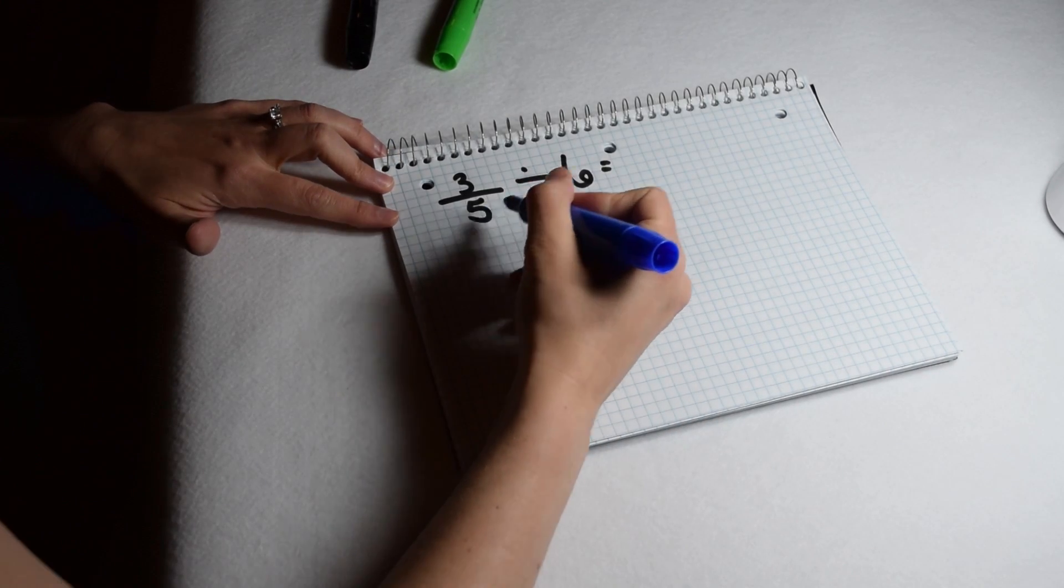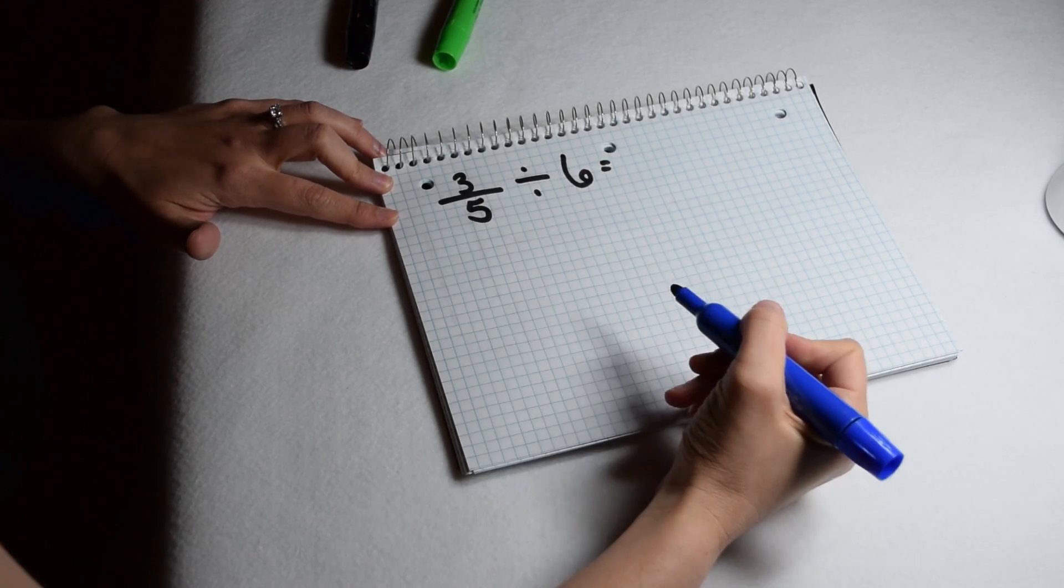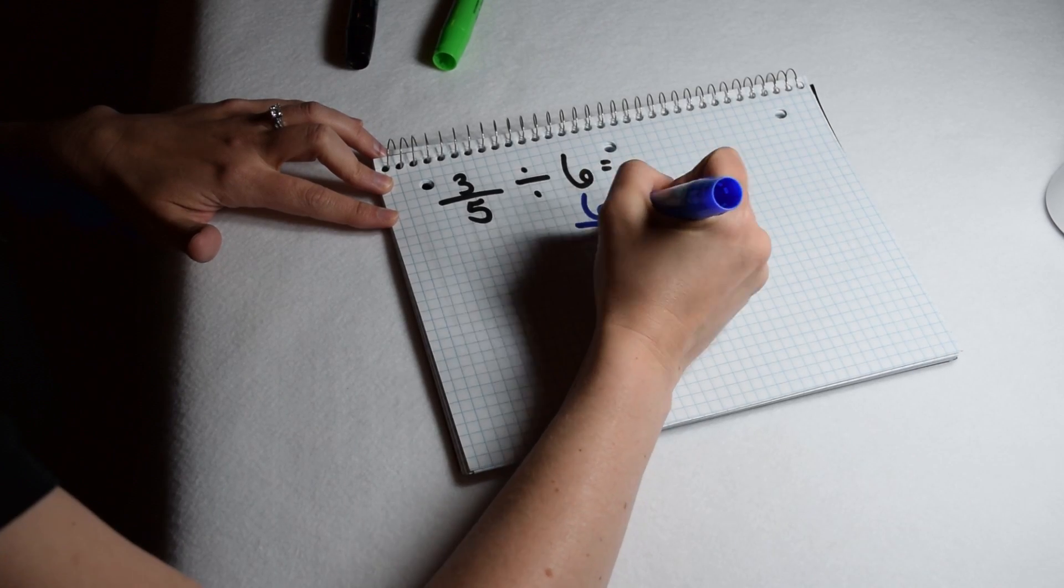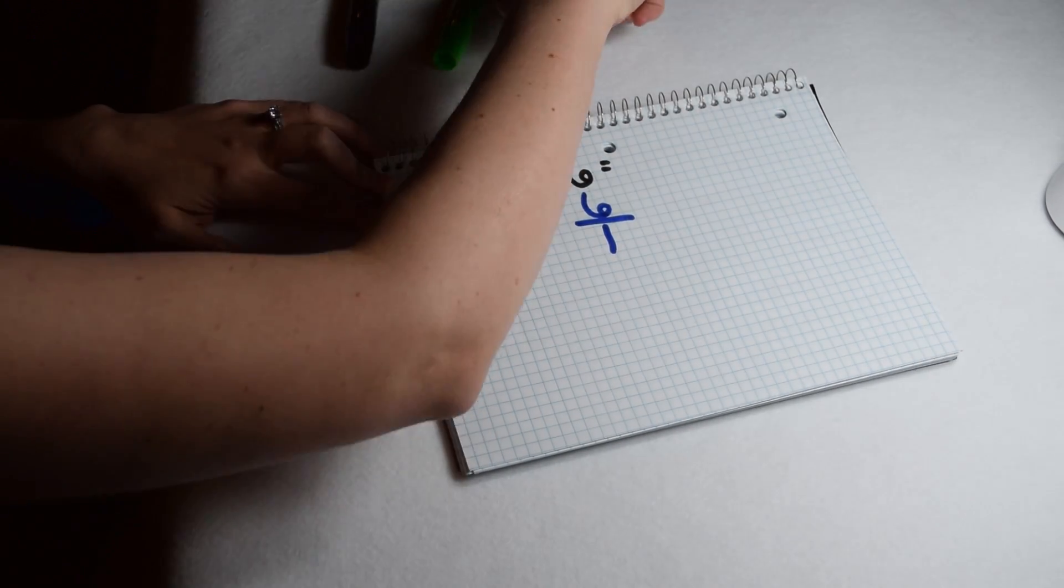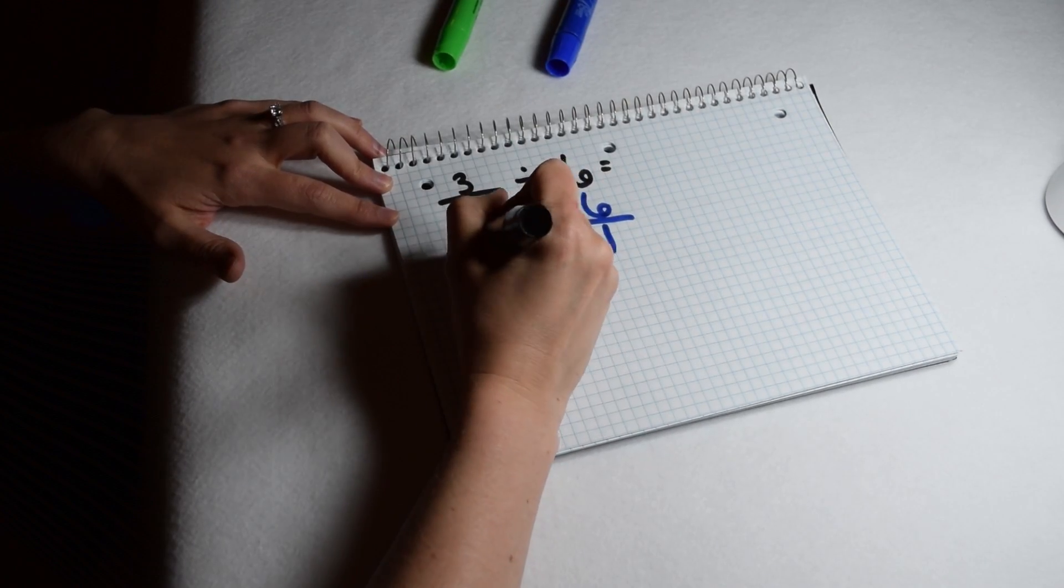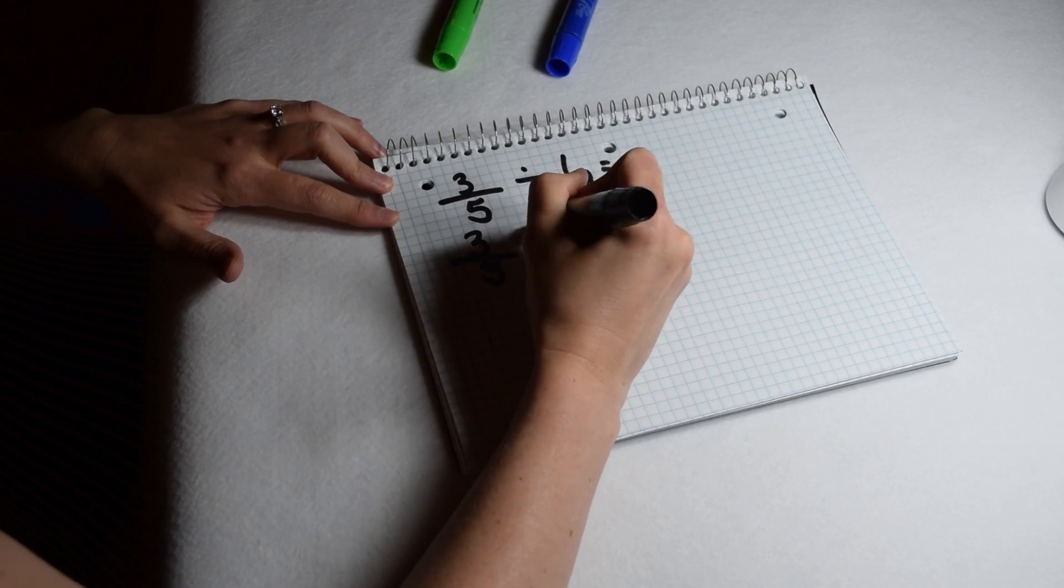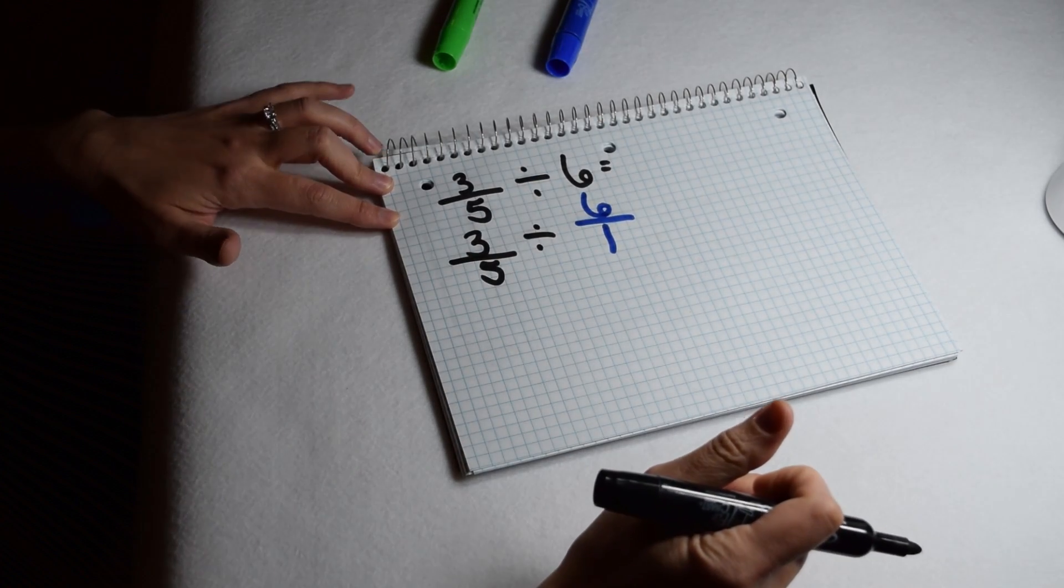If I'm going to focus on solving three fifths divided by six, the first thing we need to do is take our six and turn it into a fraction. We can do that by putting it over a denominator of one. Now we can focus on solving three fifths divided by six over one.